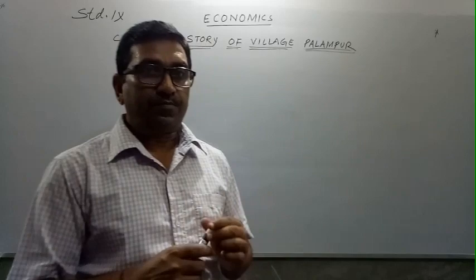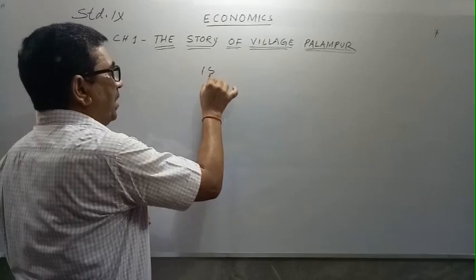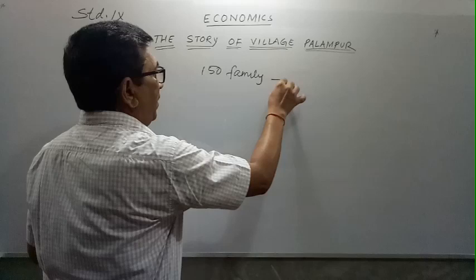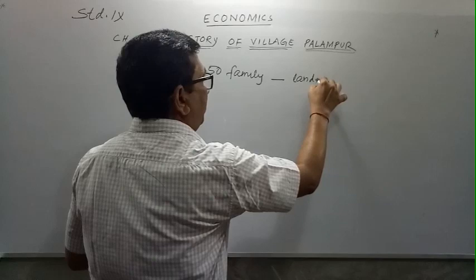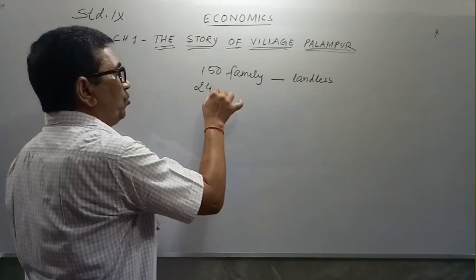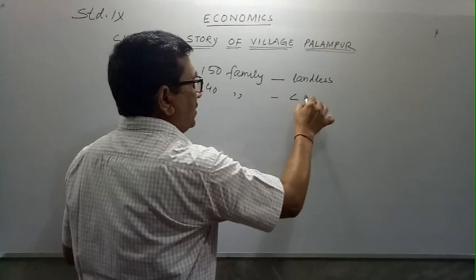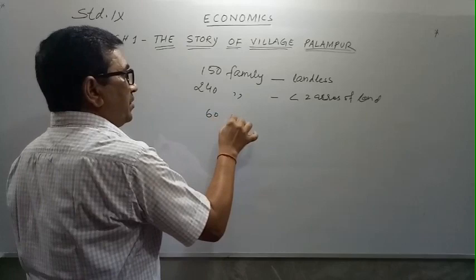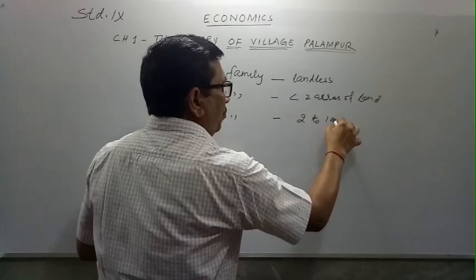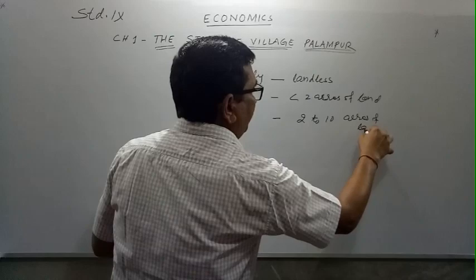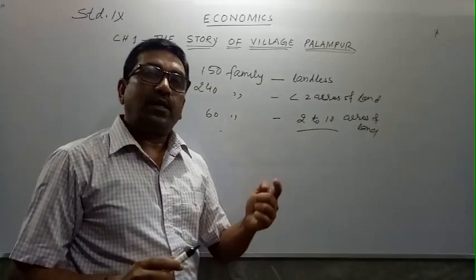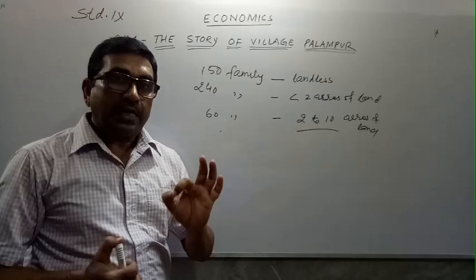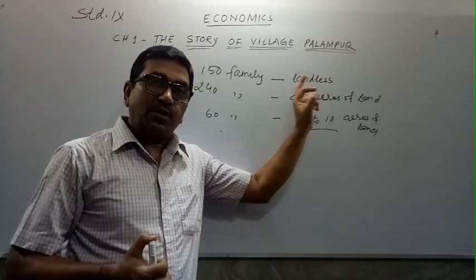To understand this scenario we must look at the distribution of land in Palampur. There are 150 landless families, 240 families with less than 2 acres of land, and 60 families with between 2 to 10 acres of land. Among these, a few have even more than 10 acres.